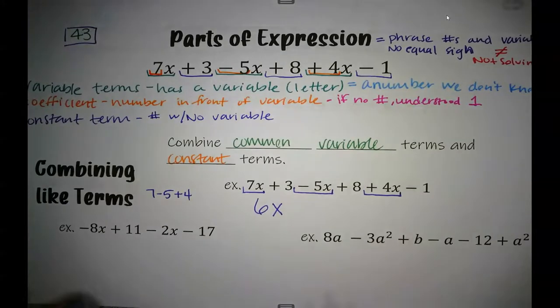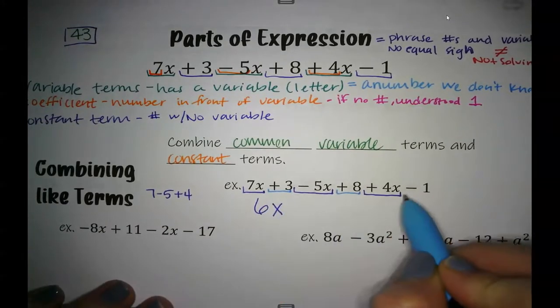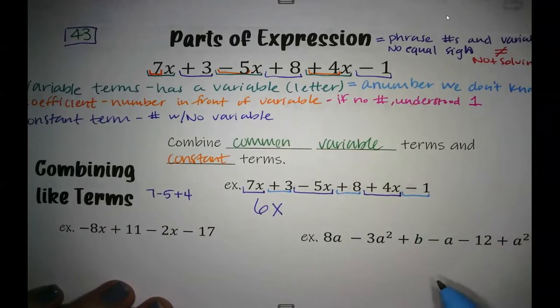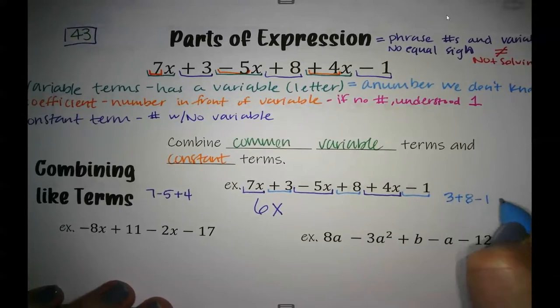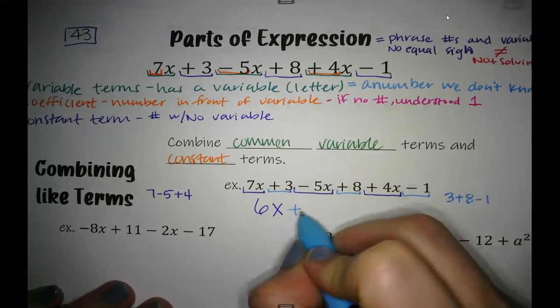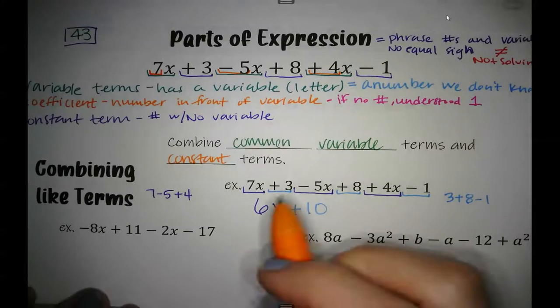Then we've got some constant terms: positive 3, positive 8, and minus 1. I can write that out to the side: 3 plus 8 minus 1, and that equals positive 10. So my combined like terms, my simplified answer of this expression is 6x plus 10.